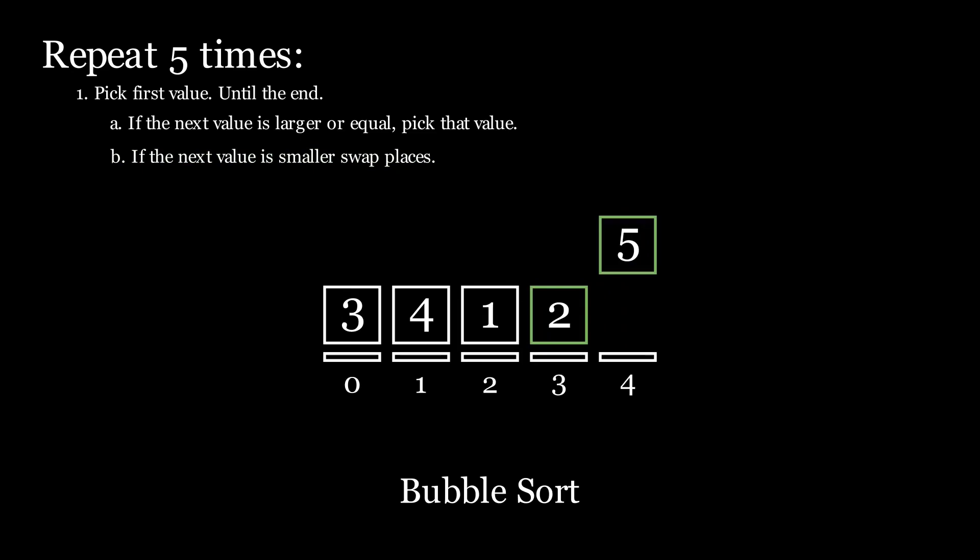5 has no next value to compare itself to. So we have completed rules A and B until the end of our list. We notice how 5 is the largest value in our list and it has risen to the top first.